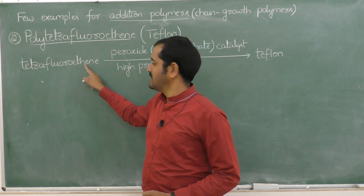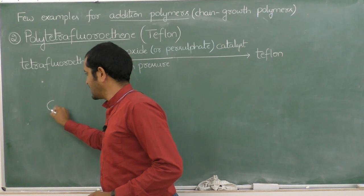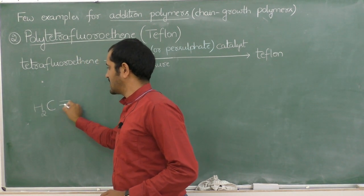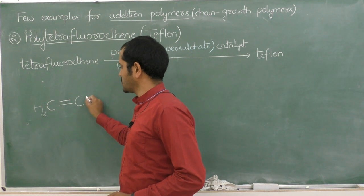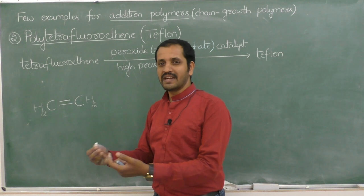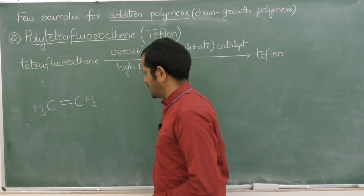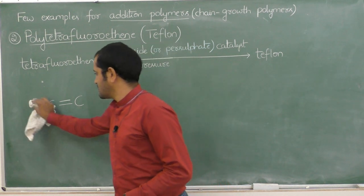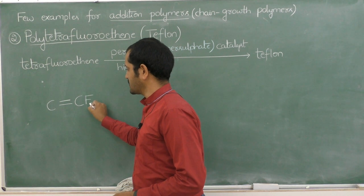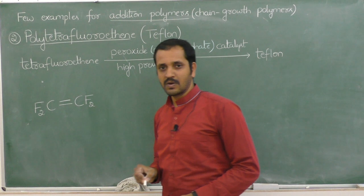The monomer tetrafluoroethylene is derived from ethene (CH₂=CH₂) by replacing all four hydrogen atoms with fluorine atoms, giving CF₂=CF₂. Since there are four fluorine atoms, the prefix is tetrafluoro, and with two carbons and a double bond the name ends in ethylene — hence tetrafluoroethylene.